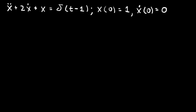Let's solve the differential equation x double dot plus 2x dot plus x equals delta of t minus 1. This is the Dirac delta function, so it's infinite when t equals 1 and 0 everywhere else, and it integrates to 1. We're solving this as an initial value problem with x of 0 equals 1 and x dot of 0 equals 0.